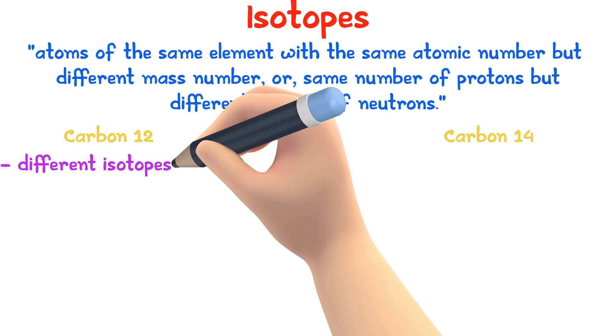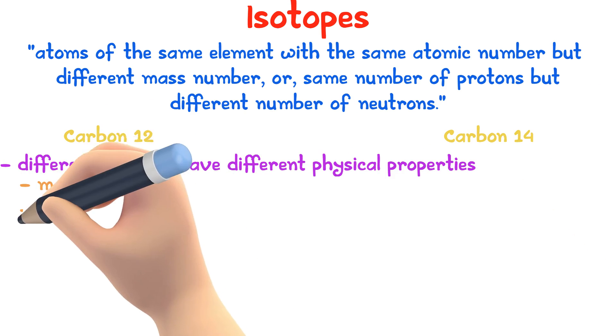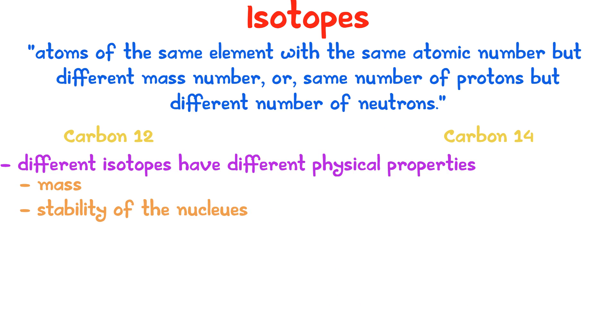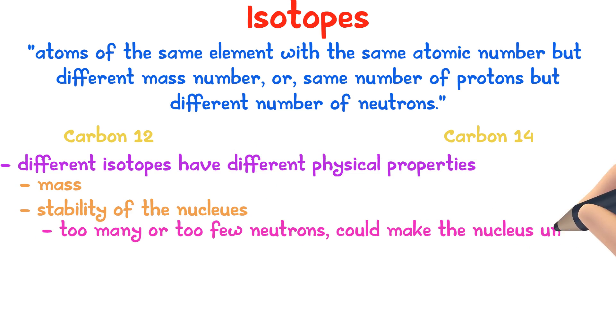Different isotopes of an element have different physical properties. Other than the mass, another difference is the stability of the nucleus. Too many or too few neutrons would make the nucleus unstable and eventually decay.